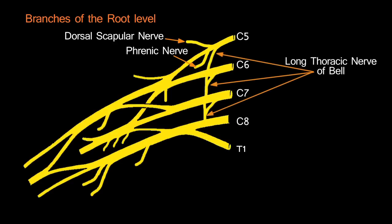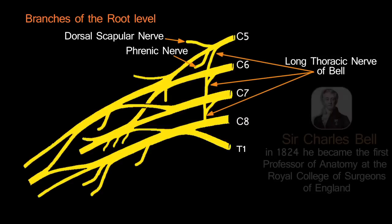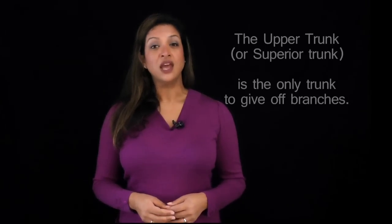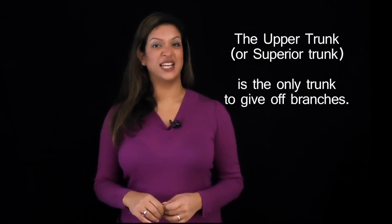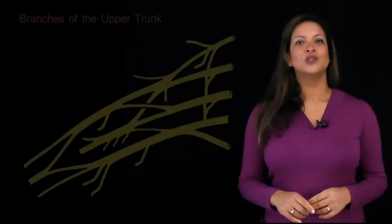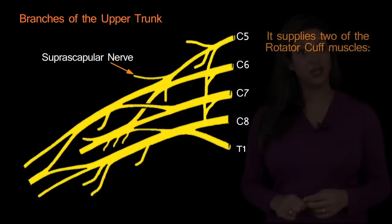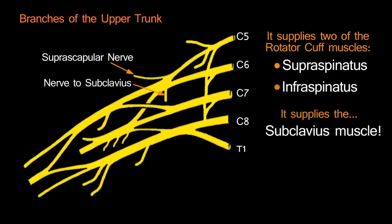The third root-level branch is the long thoracic nerve of Bell, from C5, C6, C7, named after Charles Bell, the first professor of anatomy at the Royal College of Surgeons of England. Moving on to the trunks, the upper trunk is the only trunk that gives off branches. The first is the suprascapular nerve, which supplies two of the four rotator cuff muscles: supraspinatus and infraspinatus. The other branch, often forgotten, is the nerve to subclavius.